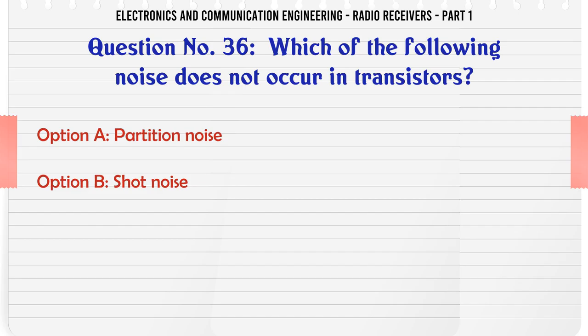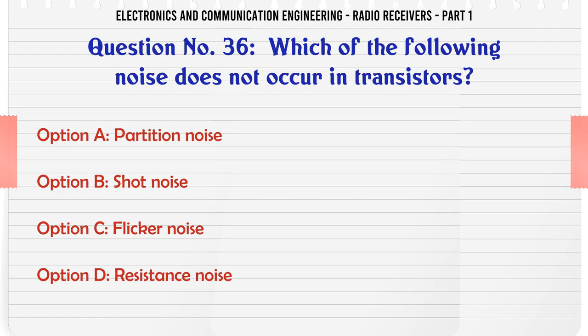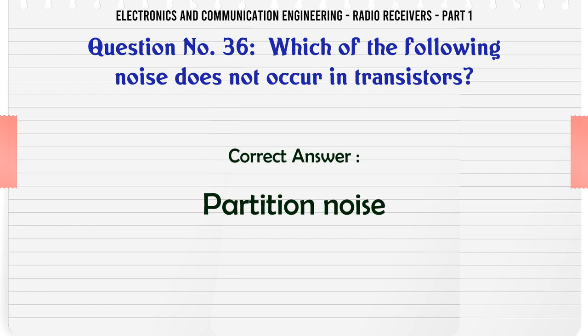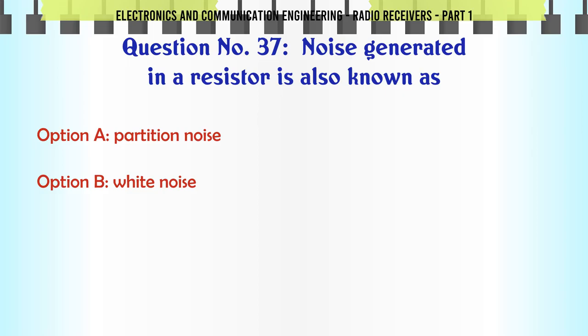Which of the following noise does not occur in transistors? A. Partition noise. B. Shot noise. C. Flicker noise. D. Resistance noise. The correct answer is partition noise.